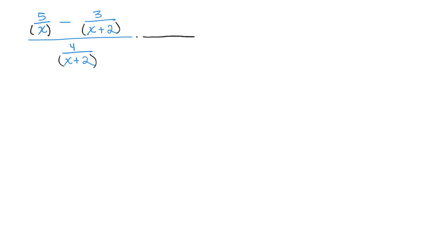I'm going to multiply both the numerator by x times x plus 2 over 1 and the denominator by x times x plus 2 over 1. You don't have to put over 1.